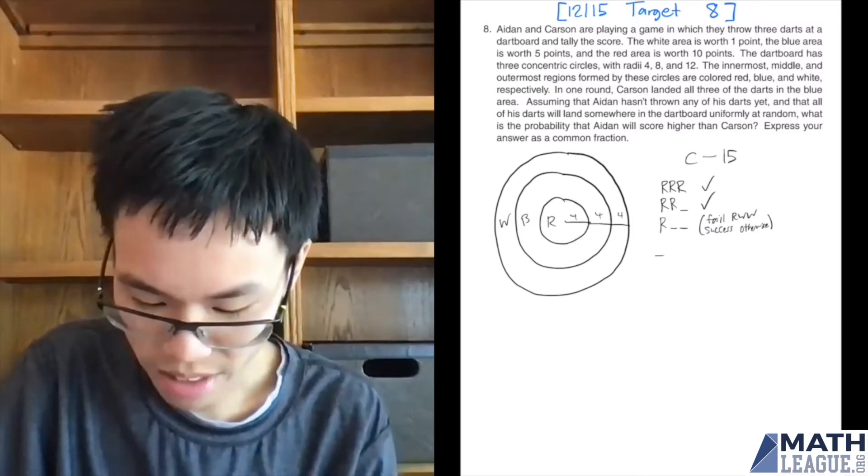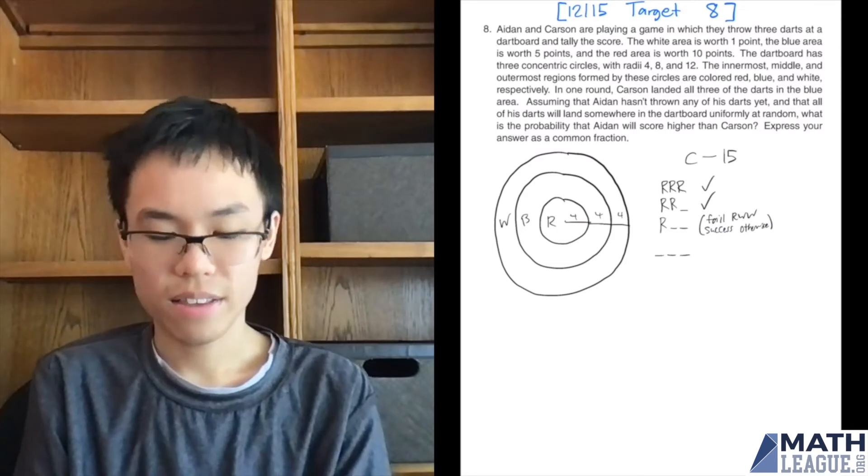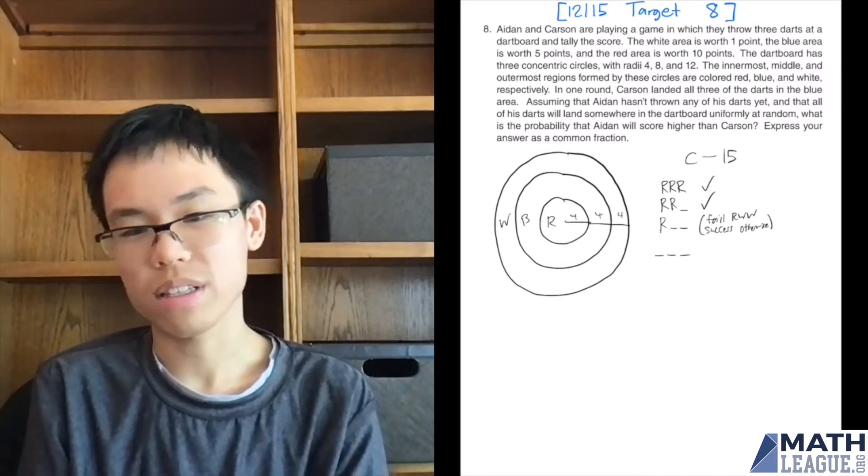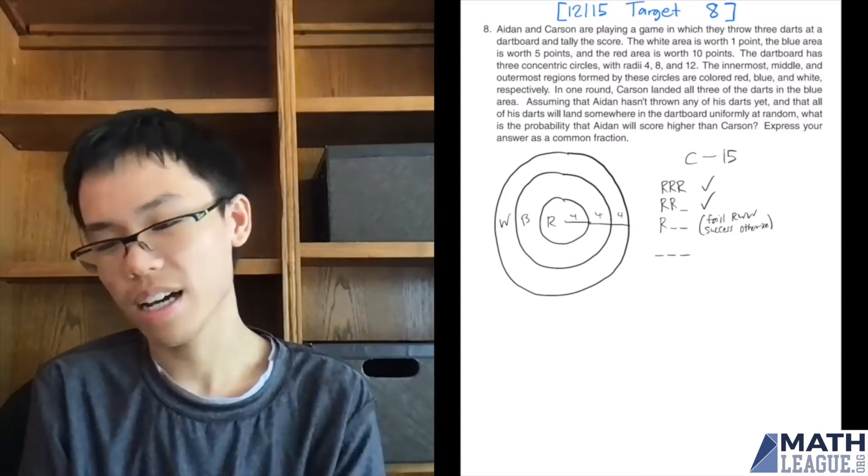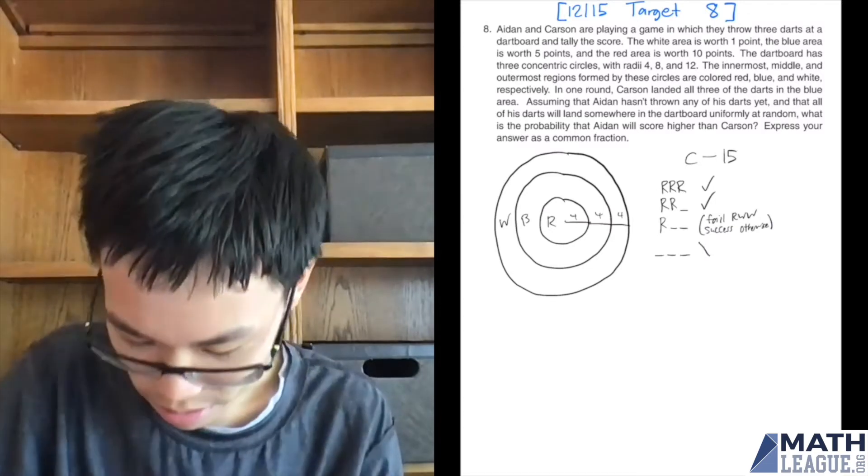And finally, if he scores no reds, then the highest other scoring area would be in the blue area, but that would only lead to 15 points. That would tie Carson, but not enough to beat him. So that would be a fail.